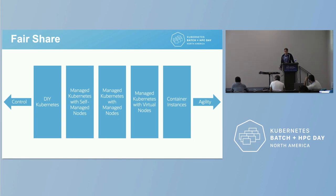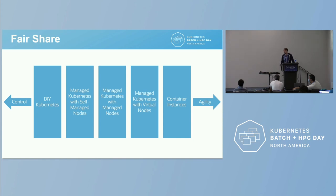For folks using managed services, the responsibilities for owning and maintaining the control plane are largely completely removed from you. You don't have to think about the API server, but it does come with the drawback of not having access to greater control over those flags. Users can further reduce the operational burden by doing things like using virtual nodes — this might be Fargate, Oracle Virtual Nodes, or GKE Autopilot — which removes the need to manage OS-level patching, Kubernetes updates, or scaling. But depending on your provider, this also comes with limitations; again, you're trading flexibility for increased responsibility.